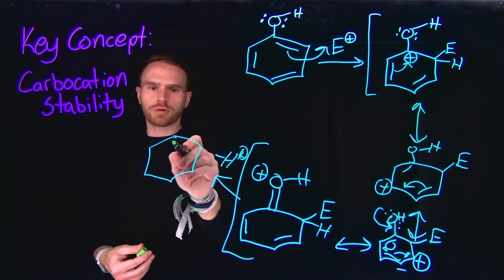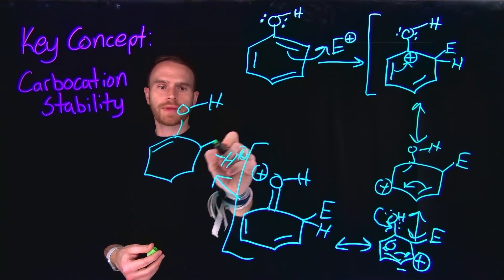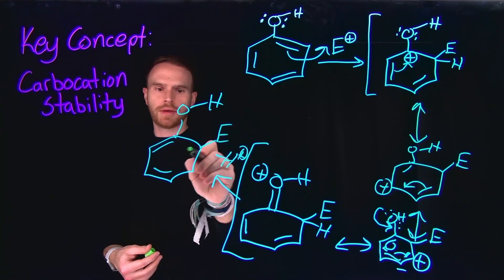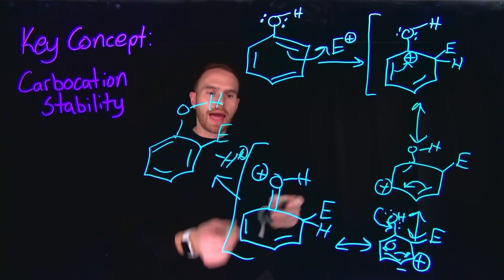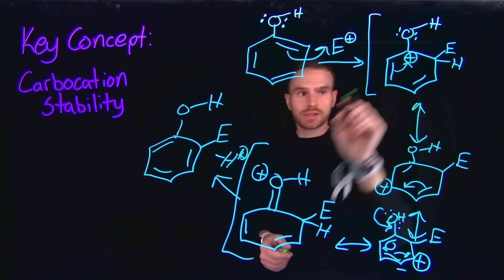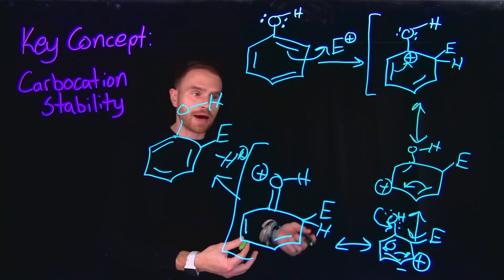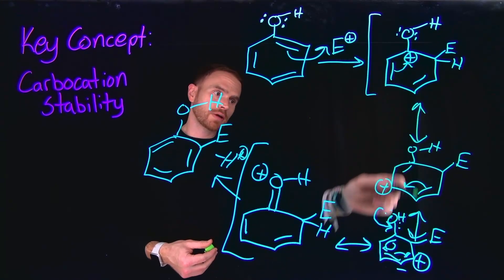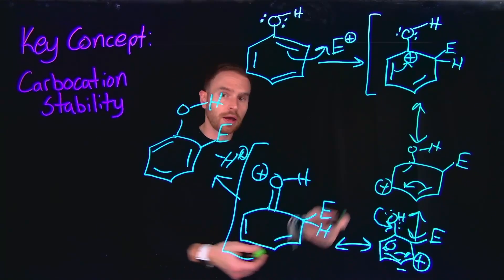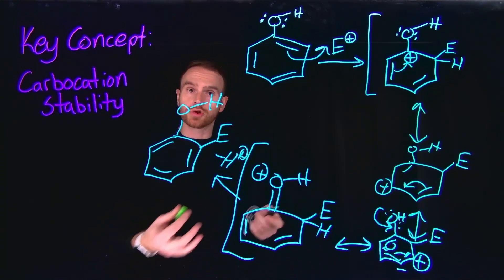After deprotonation in electrophilic aromatic substitution, this generates the final product with the electrophile at the ortho position. Due to the stability of these different resonance structures, this is a viable pathway, because each resonance structure provides a stable route for product formation.